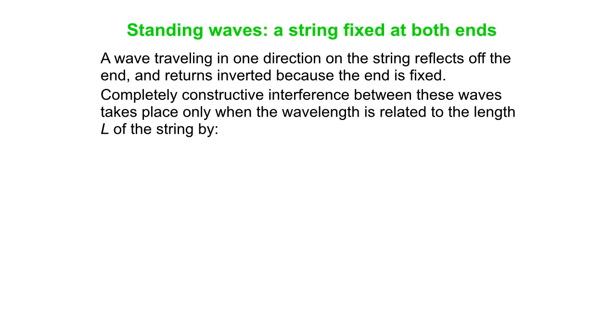You get completely constructive interference only when the wavelength is related to the length of the string by this: when you get an integer number of half wavelengths fitting in the length of the string. n is an integer.